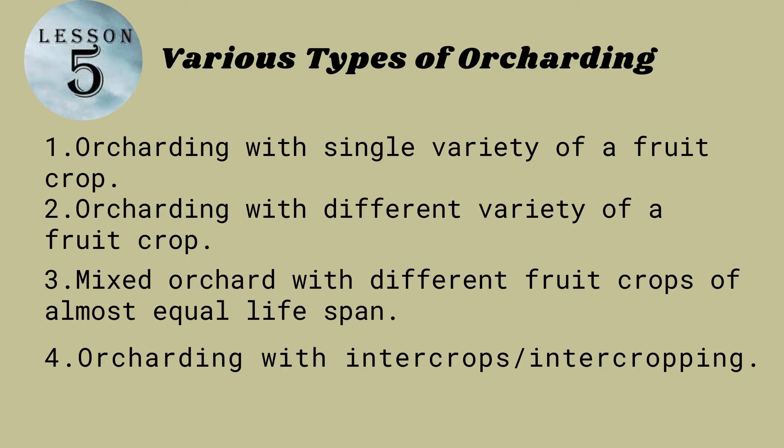We have various types of orcharding. Orcharding is defined as the cultivation of an orchard, whether fruits, nuts, or others. The types are: number one, orcharding with a single variety of a fruit crop; number two, orcharding with different varieties of fruit crop; number three, mixed orchard with different fruit crops of almost equal life span; and number four, orcharding with inter-cropping.